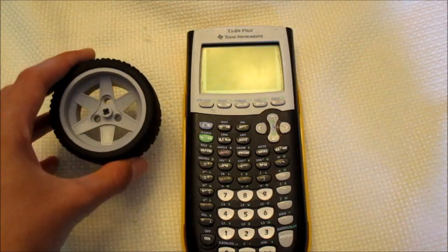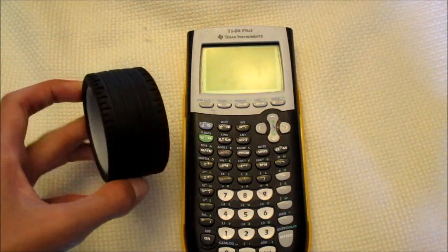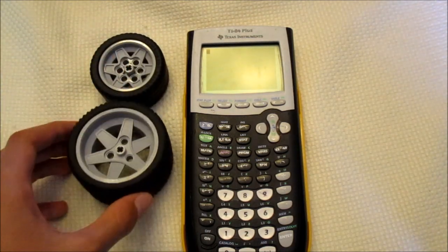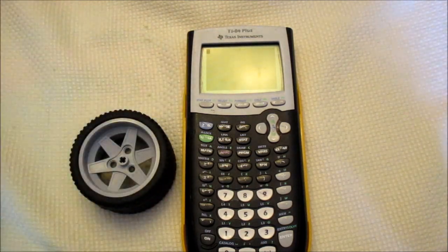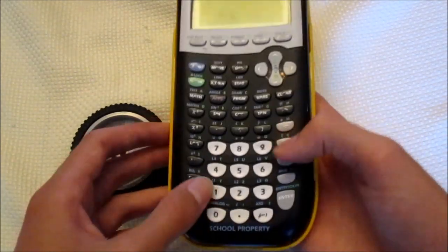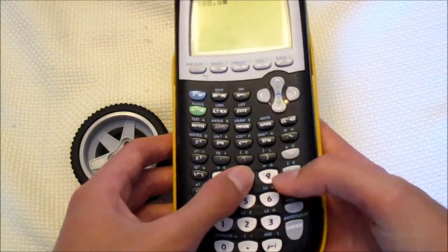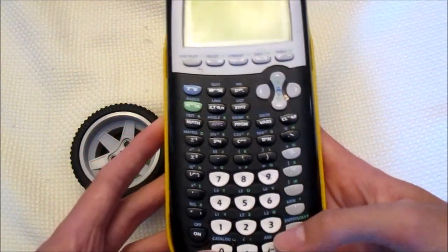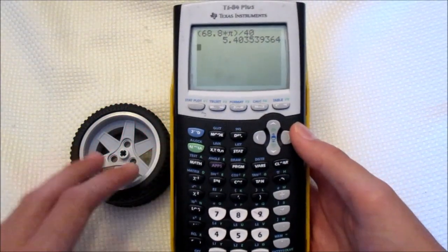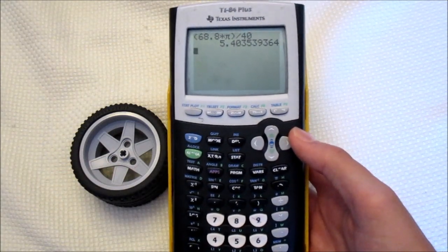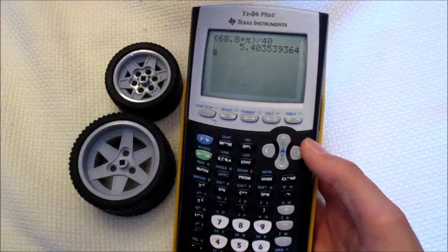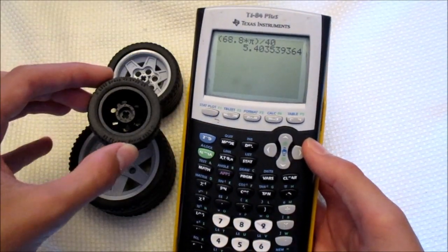The next wheels that we're going to calculate the slop distance for is these slightly larger race car wheels, which are similar to the last wheels we measured, but a little bit bigger. So here's the size comparison. Now their diameter is quoted at 68.8 millimeters. So multiply that by pi, and then divide by 40. And we see they have 5.4 millimeters of slop distance, which is 1 millimeter more than this wheel, and in turn 2 millimeters more than these wheels.